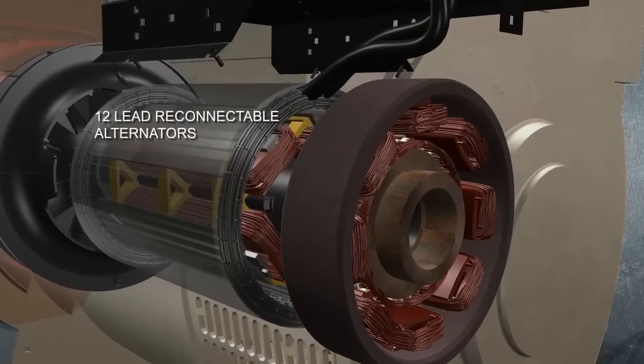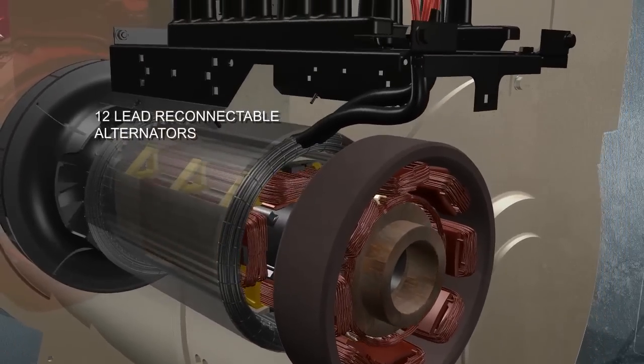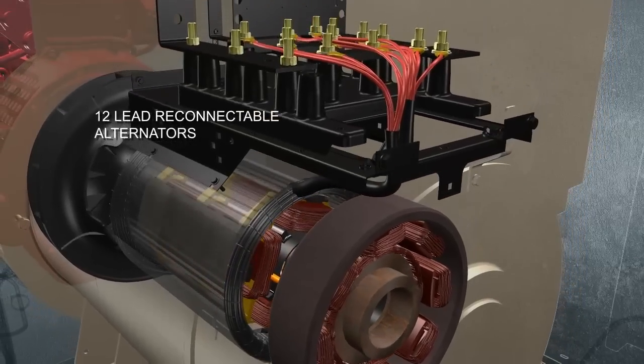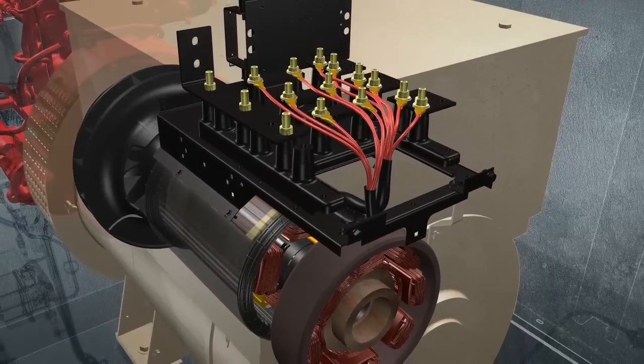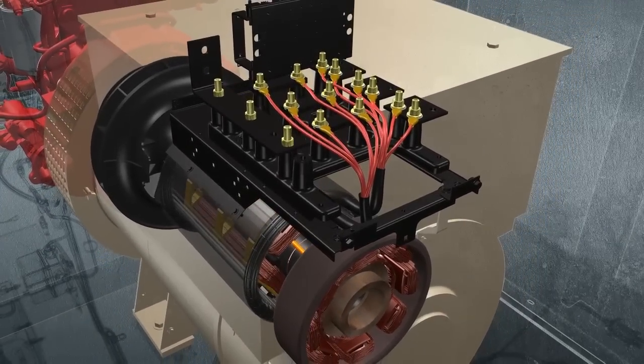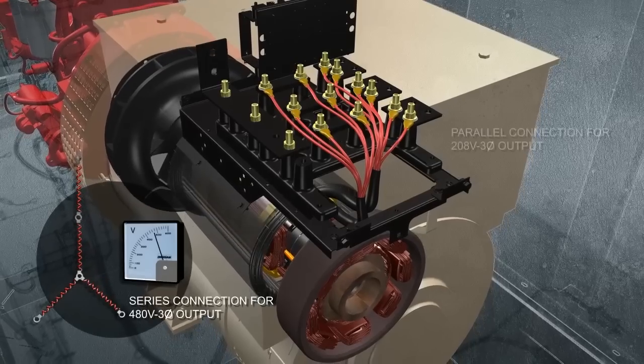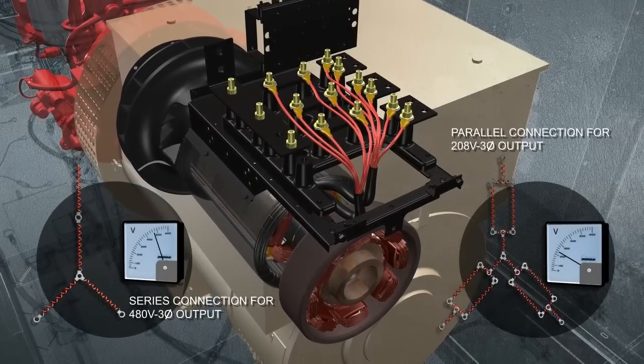Doosan Mobile Generators also include alternators with six coils wound into the stator. This provides three voltage sources, or phases. Because each phase combines two coils of wire, the sources can be connected in series for high voltage applications, or in parallel for low voltage needs.